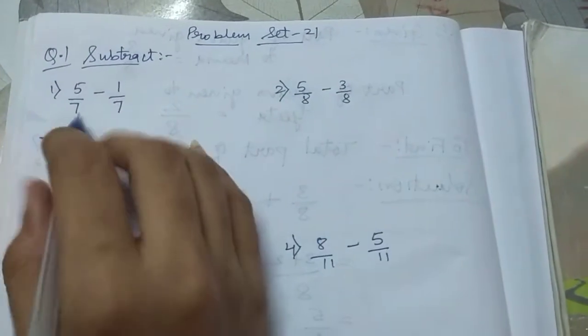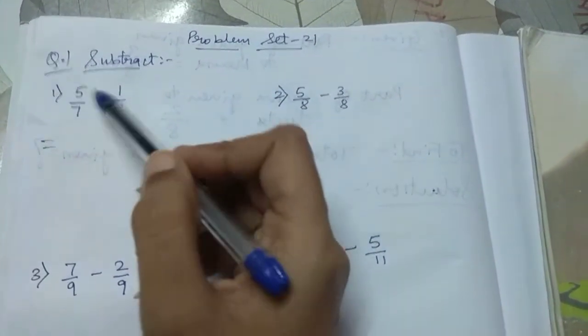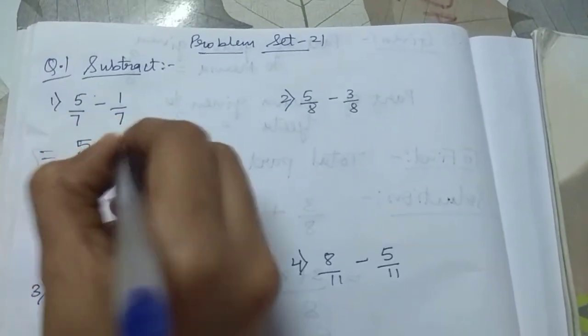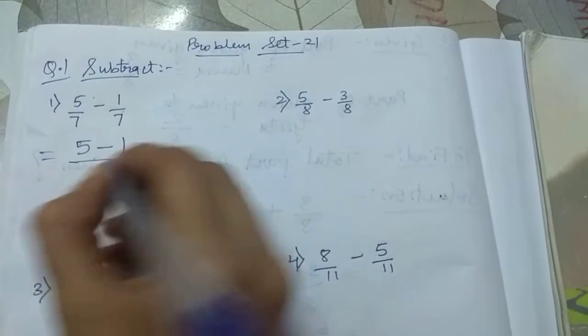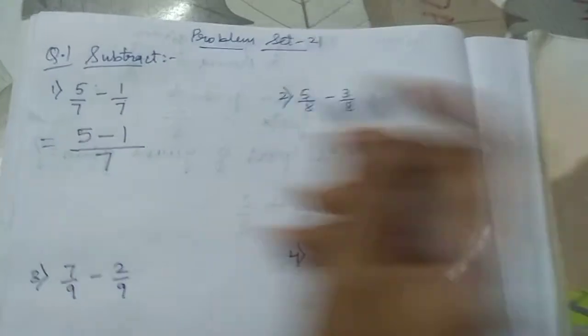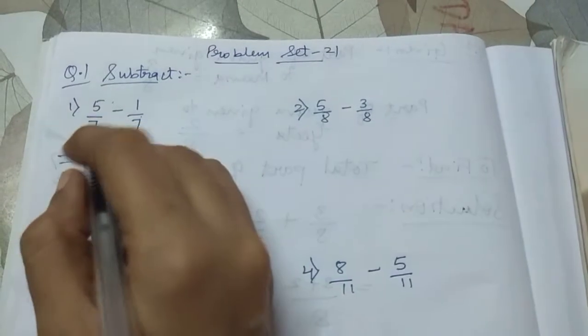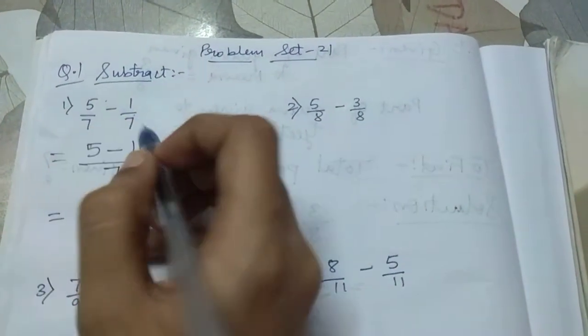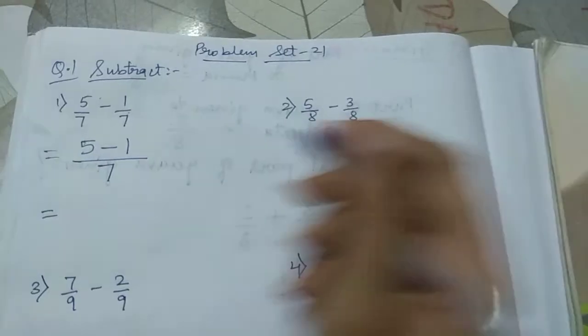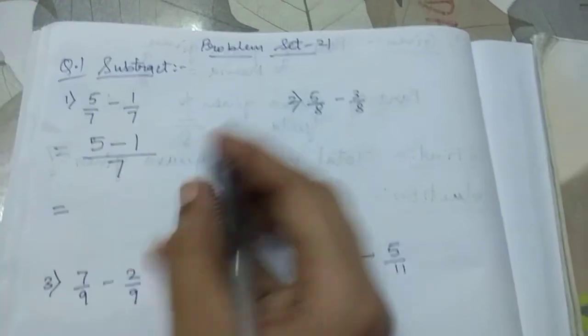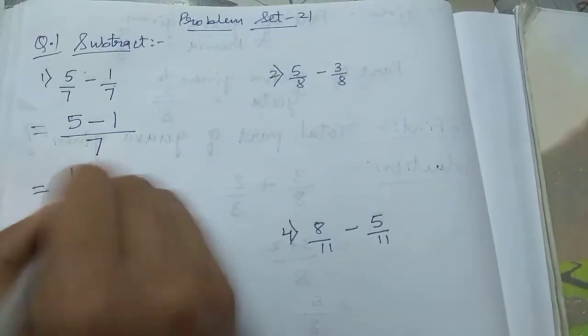So let's see, let's start 5 by 7 minus 1 by 7. We just have to subtract the numerator and not the denominator. All these reasons we have already seen why denominator doesn't get added or subtracted. So let's just subtract the numerator. So 5 minus 1 is 4 by 7.